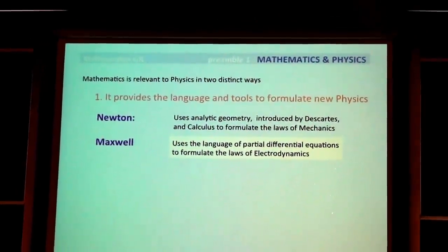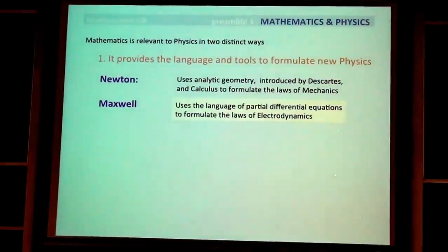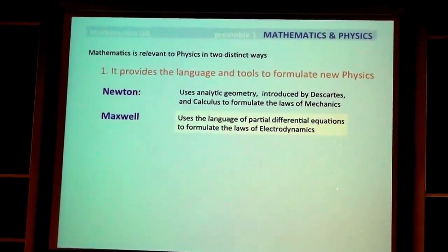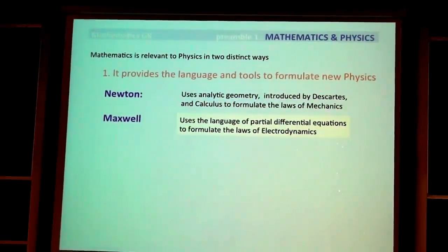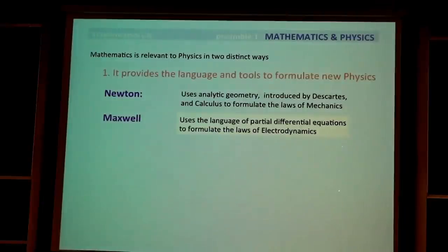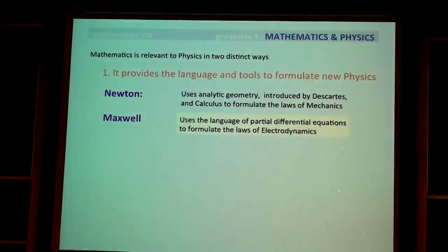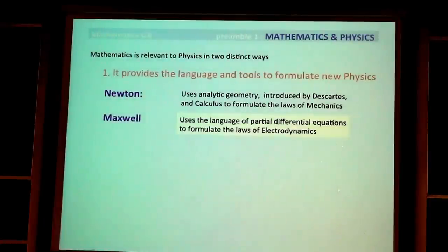Maxwell's great contribution was, in a sense, to take Faraday's laws, which were discovered experimentally, and put them into mathematical language. And the mathematical language that was needed was exactly that. By doing that, he discovered something new — essentially by the beauty of the system of equations. He observed that the system of equations corresponding to Faraday's laws was not complete, and he had to introduce a new term, which led to electromagnetic waves.